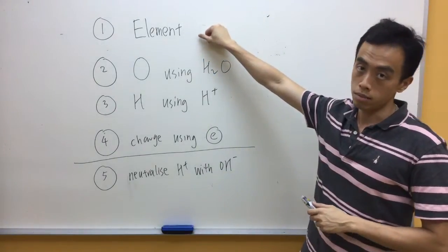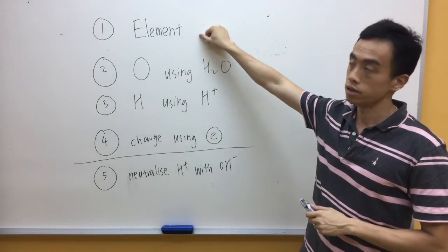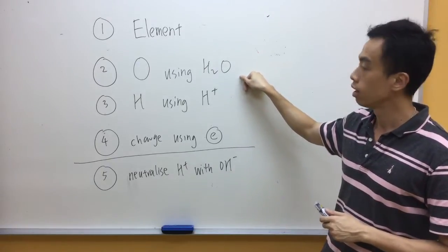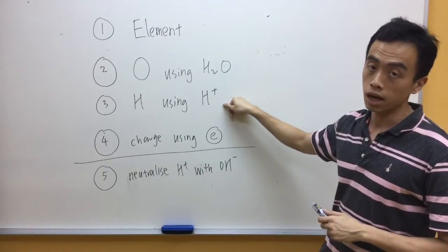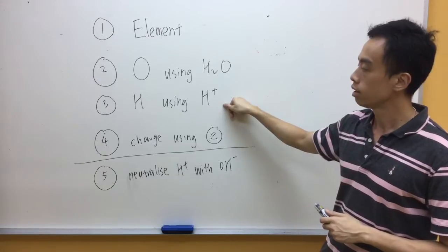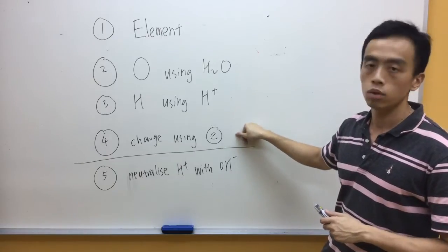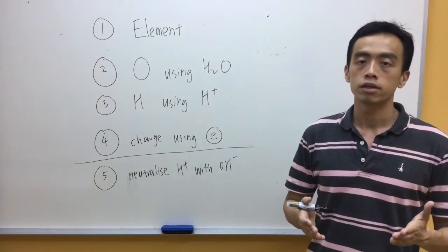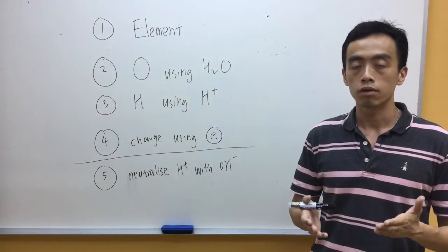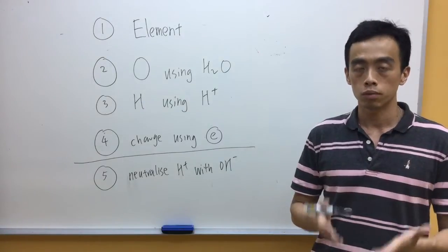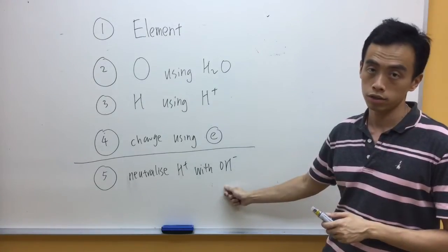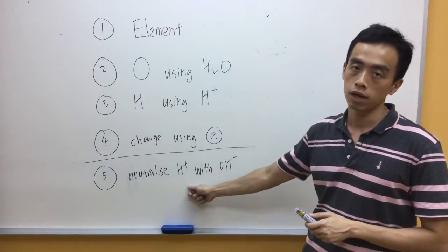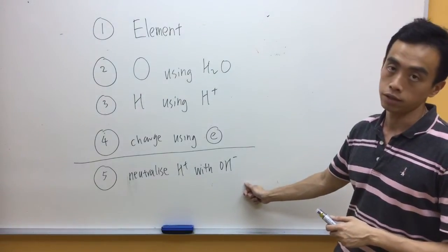The first step is to balance the element. Then we balance oxygen using water, followed by balancing hydrogen using H⁺. Lastly, we balance charge using electrons. Now, if we want to balance the half equation in alkaline medium, we add one additional step: we neutralize the H⁺ using OH⁻.